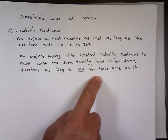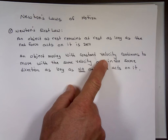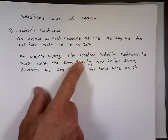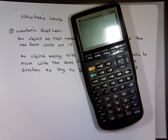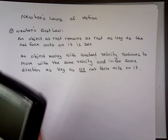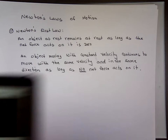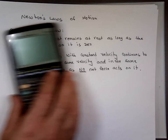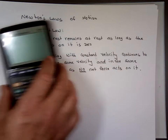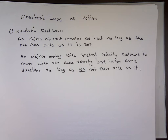According to Newton, an object moving with constant velocity continues to move with the same velocity and in the same direction. So why is it slowing down? Because friction between the calculator and the table is always pointing in the opposite direction to the direction you're moving. That's why when you take your foot off the gas pedal at 65 mph, you go from 65 to 55 to 50 to 45 — friction between the road and tire slows you down.